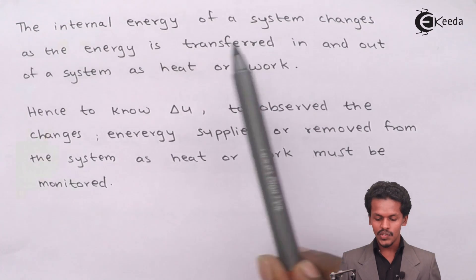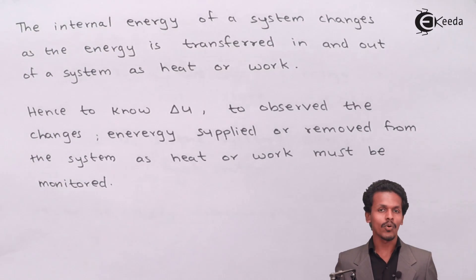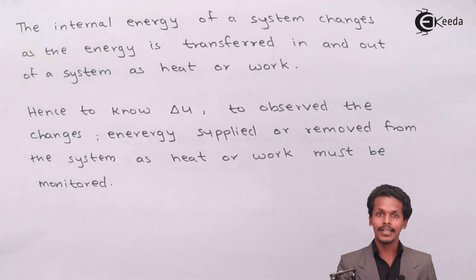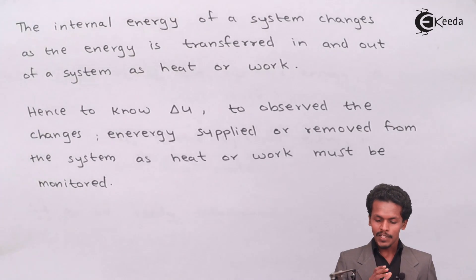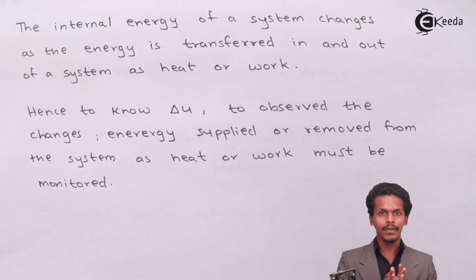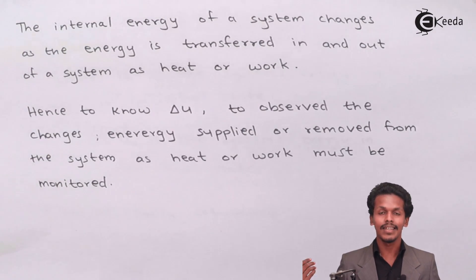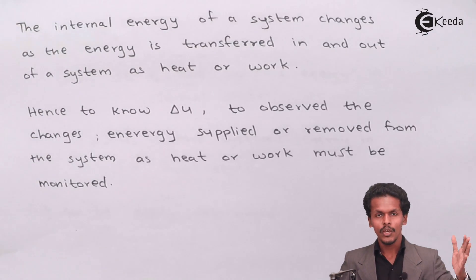The internal energy of a system changes as energy is transferred in and out of the system as heat or work. Taking the same example from earlier lectures — a gas enclosed in a cylinder fitted with a movable frictionless piston — the gas has a particular internal energy in its initial state, since internal energy is the total energy present in a system.